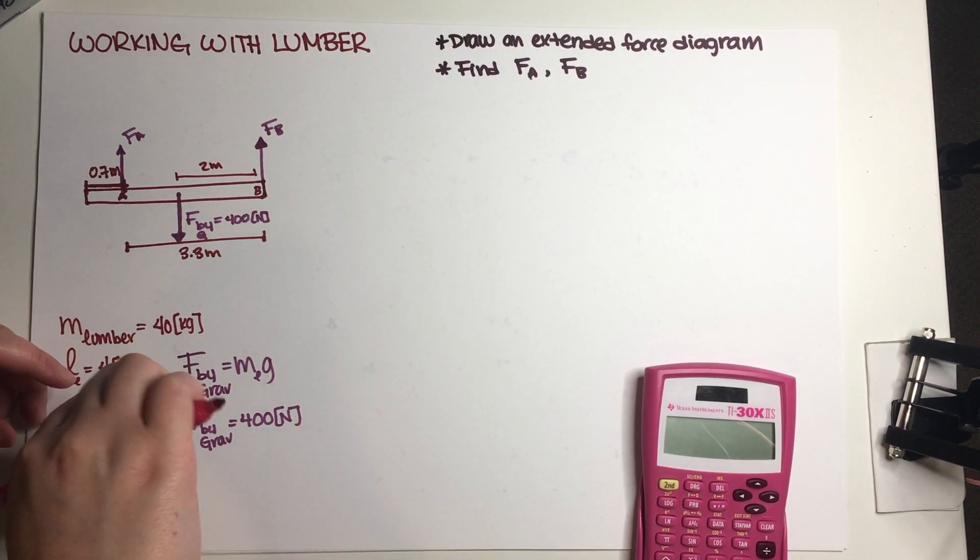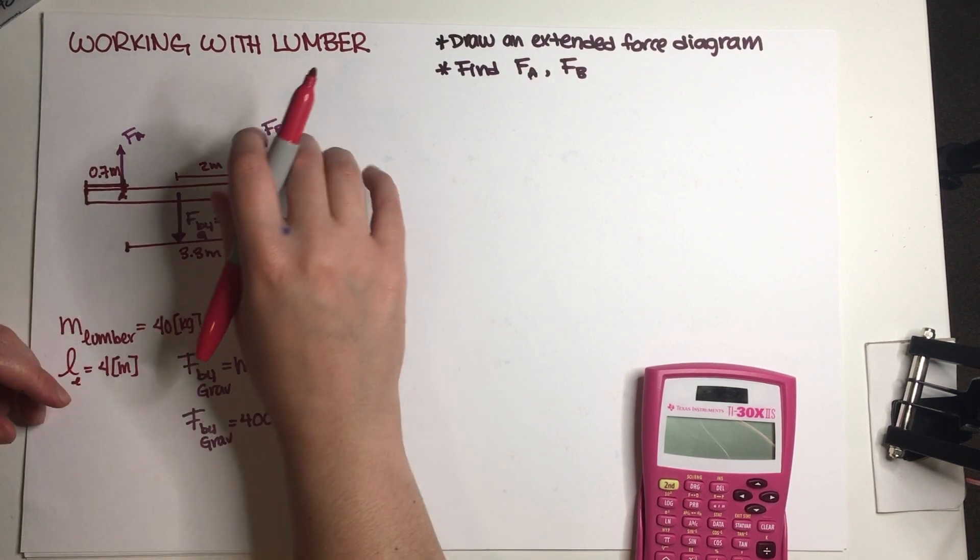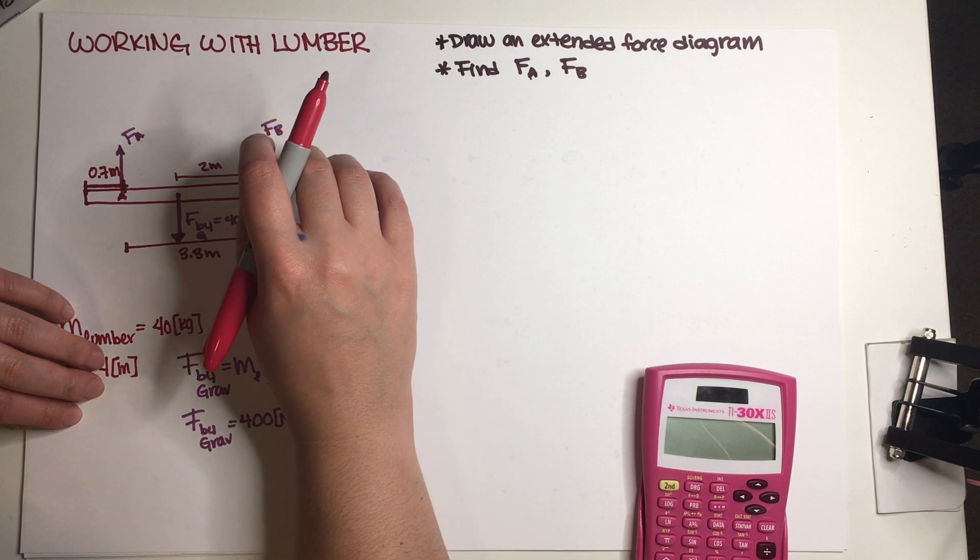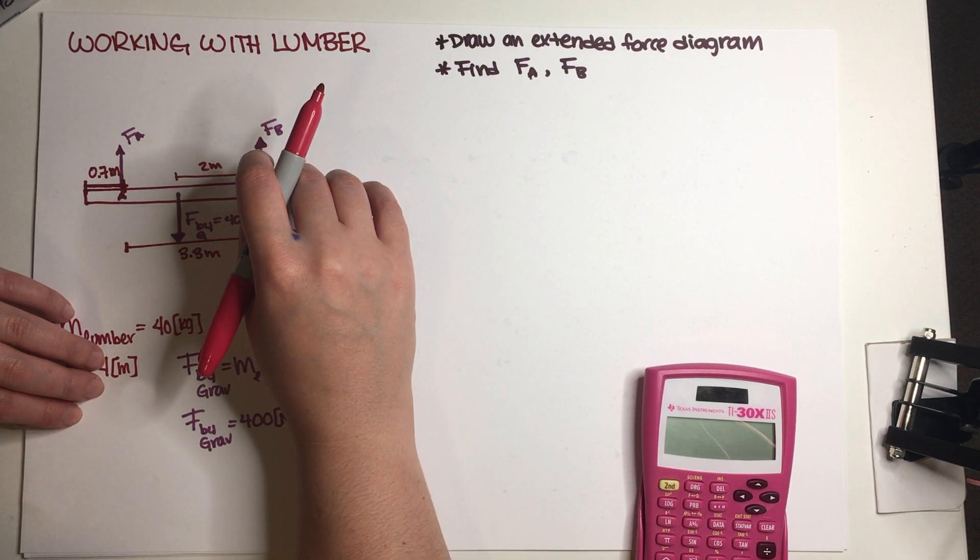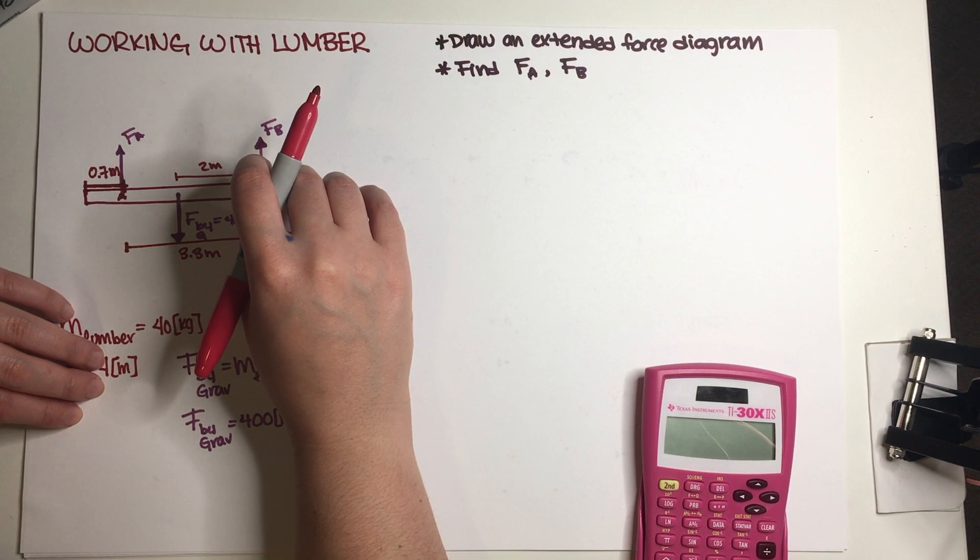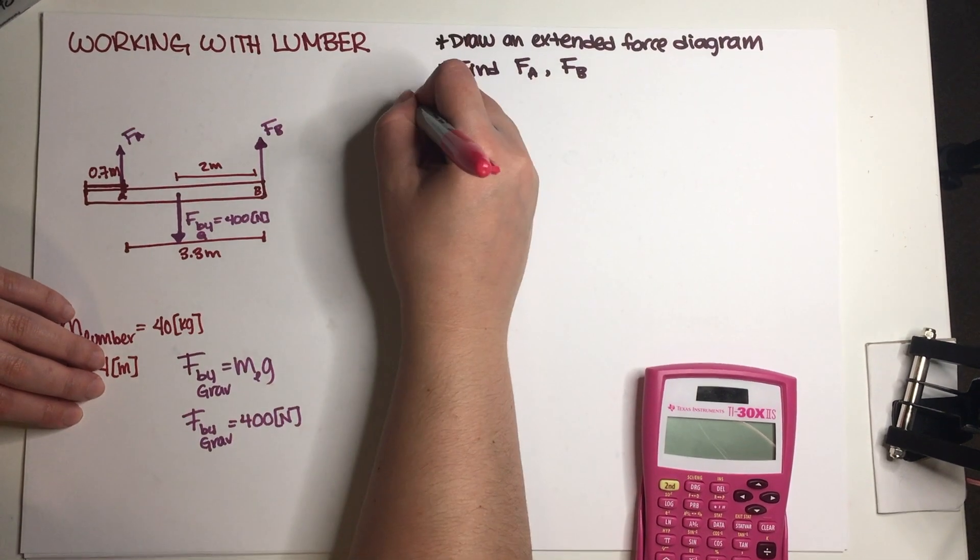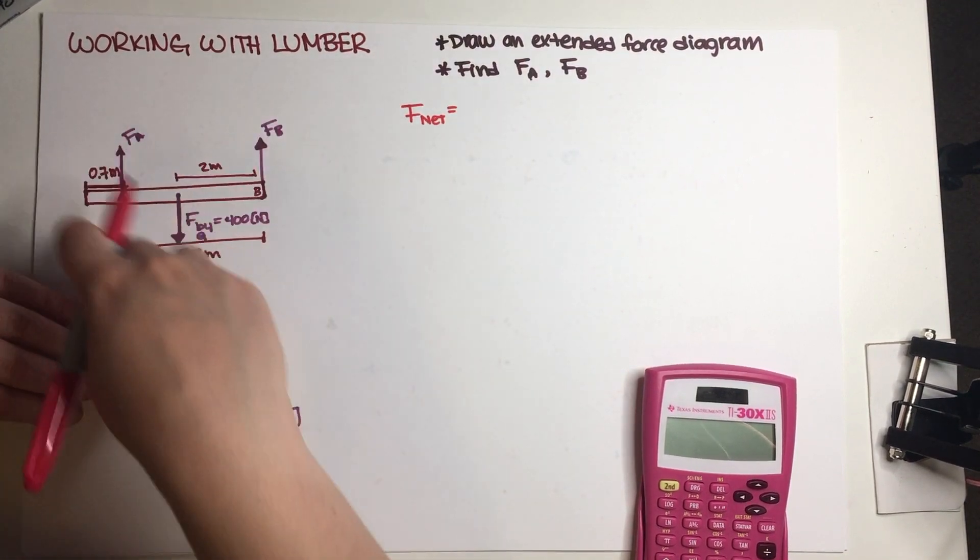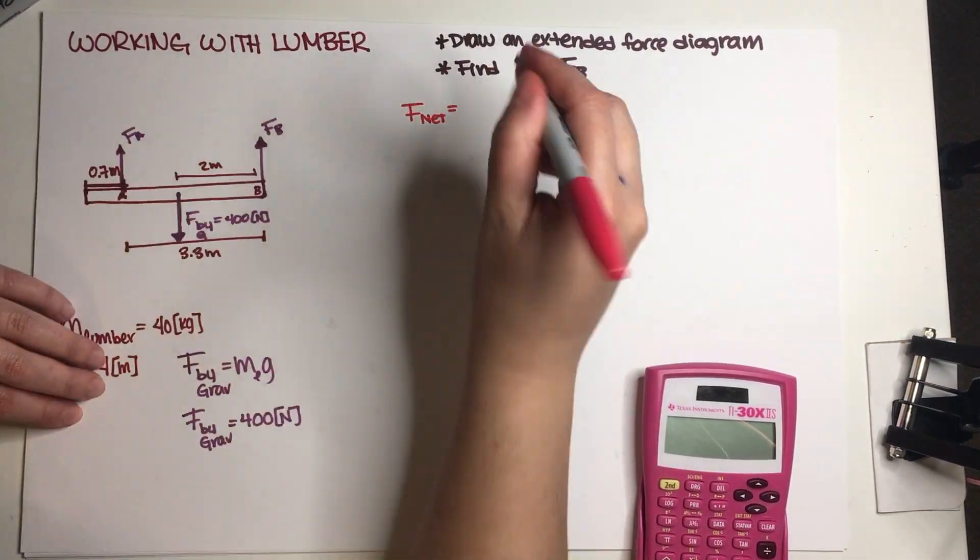So what do we know? Well we know that this lumber is not moving. Everybody is at rest. Because this lumber is not moving, then that means that the net force acting on this lumber is going to be equal to zero.